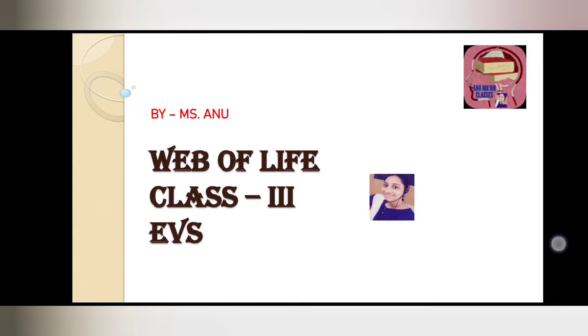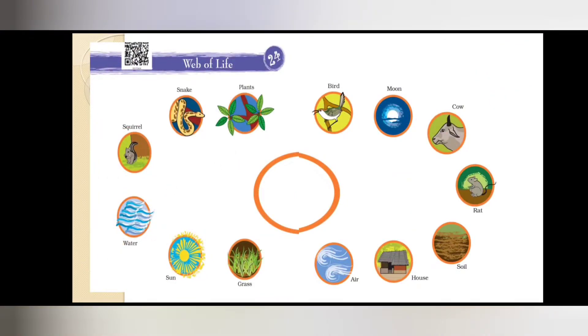Let's start this lesson. In your book, Chapter 24 Web of Life, you can see lots of things - pictures showing sun, water, squirrel, snake, plants, bird, moon, cow, rat, soil, house, air, grass. Looking at these pictures, what do you observe? These are all things that you need.